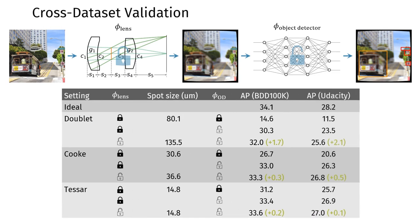Using the lens and object detector that were trained jointly on the BDD100K dataset, we validate that the improvements on object detection performance carry over to other datasets such as Udacity without retraining.